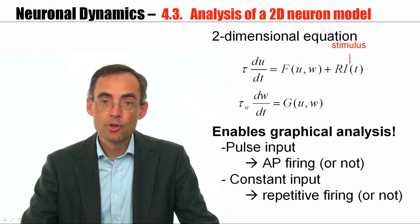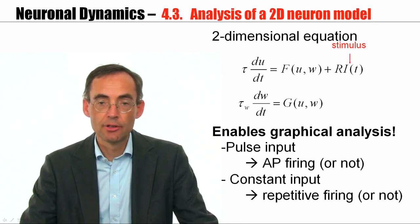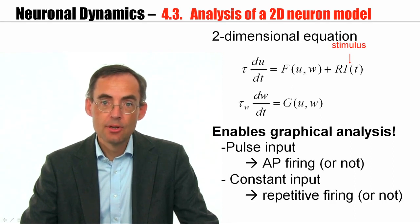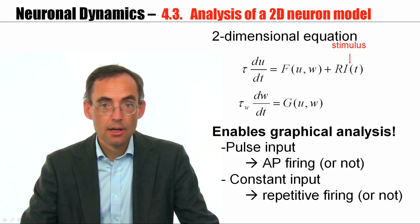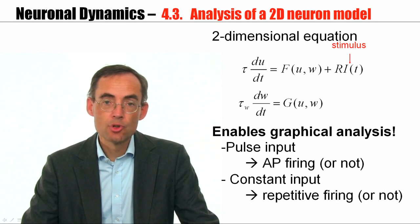Similarly, for constant current, we can understand why, above some critical value, the neuron emits spikes in a periodic fashion. The periodic firing regime corresponds to a limit cycle, a limit cycle that we can easily visualize in the phase plane.